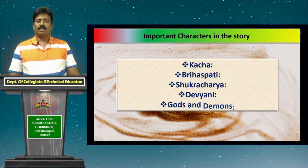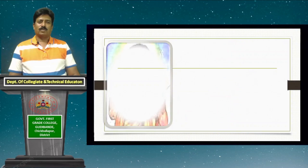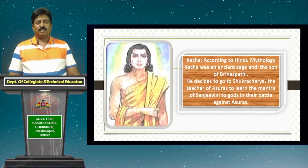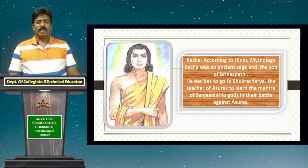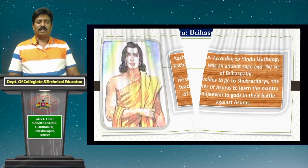The important characters in the story are Kacha, Brahaspati, Shukracharya, Devayani, Gods, and Demons. The first character is Kacha — the protagonist of the story, or in modern cinematic terms, the hero. According to Hindu mythology, Kacha was an ancient sage and the son of Brahaspati, who ventures to go to Shukracharya to learn the Sanjivini mantra.